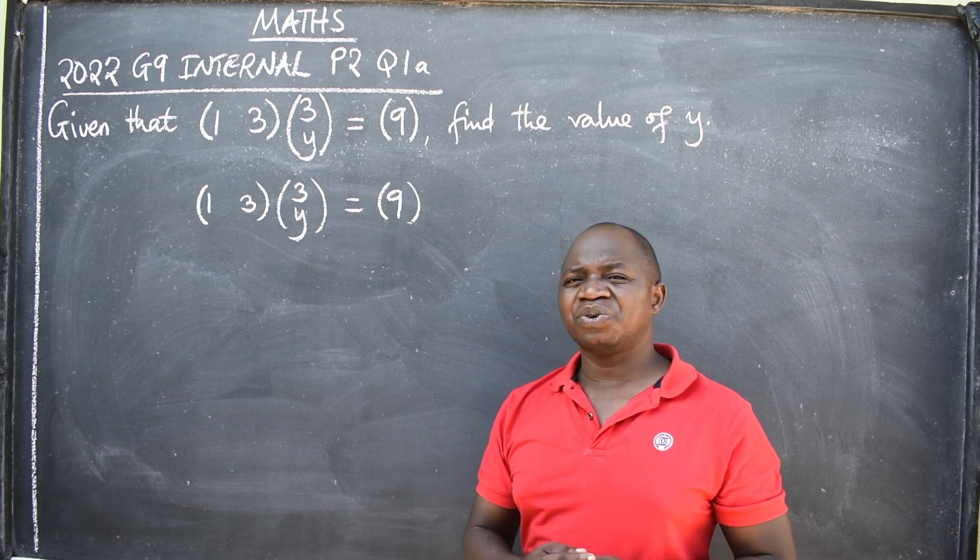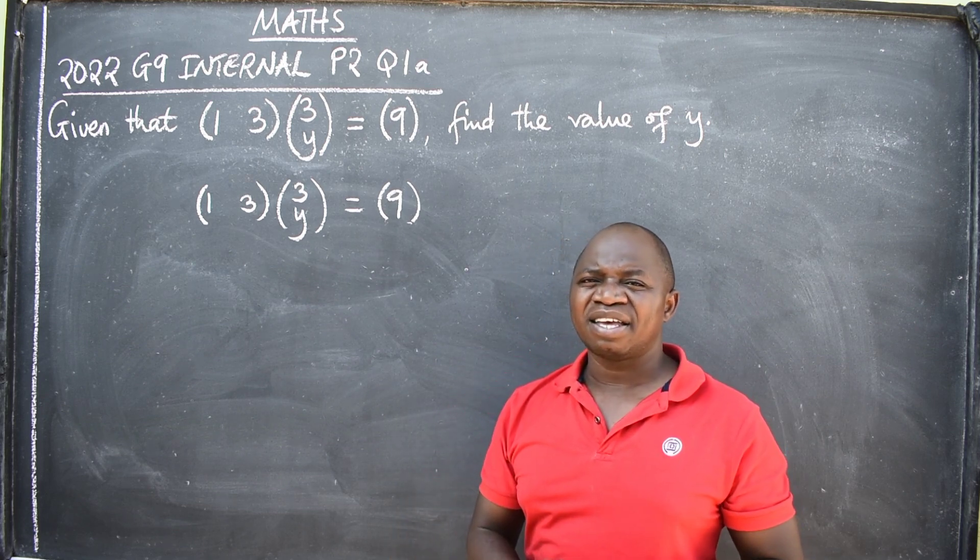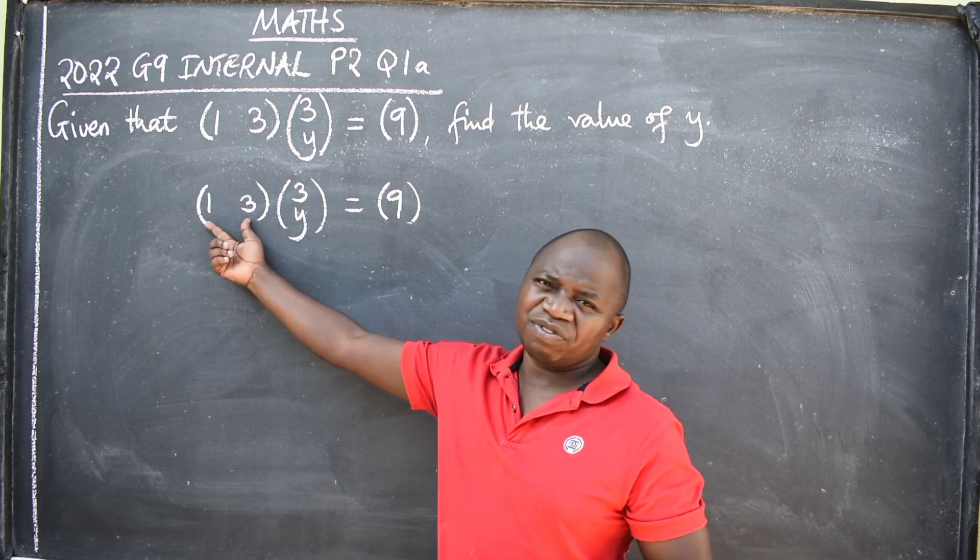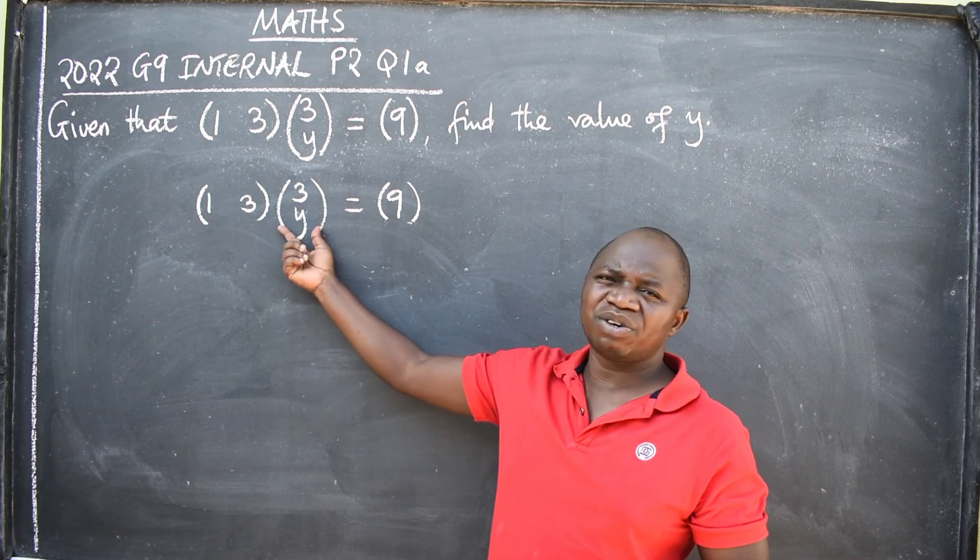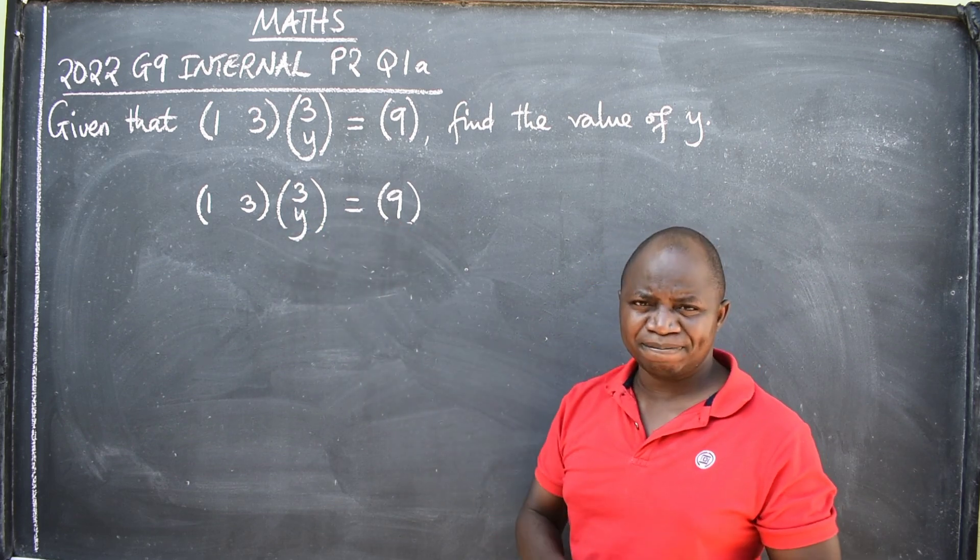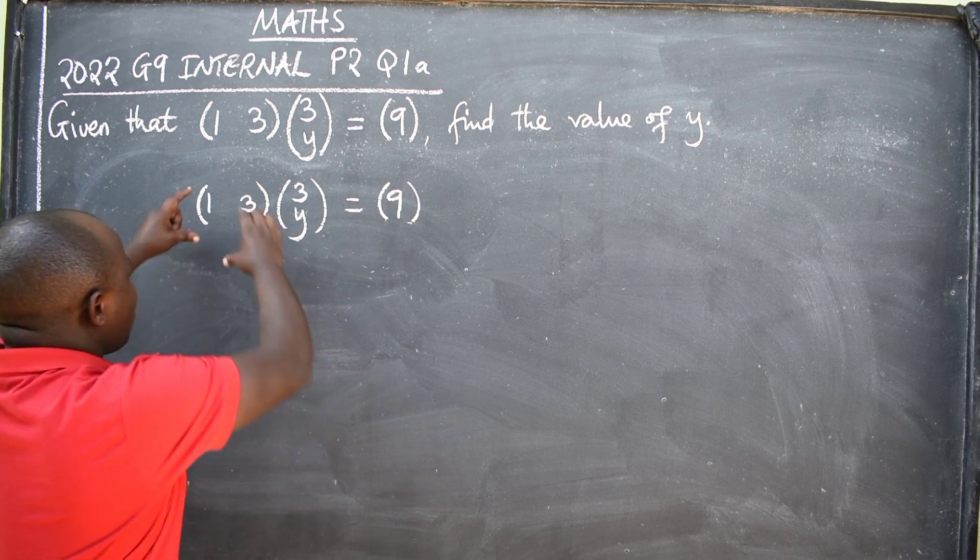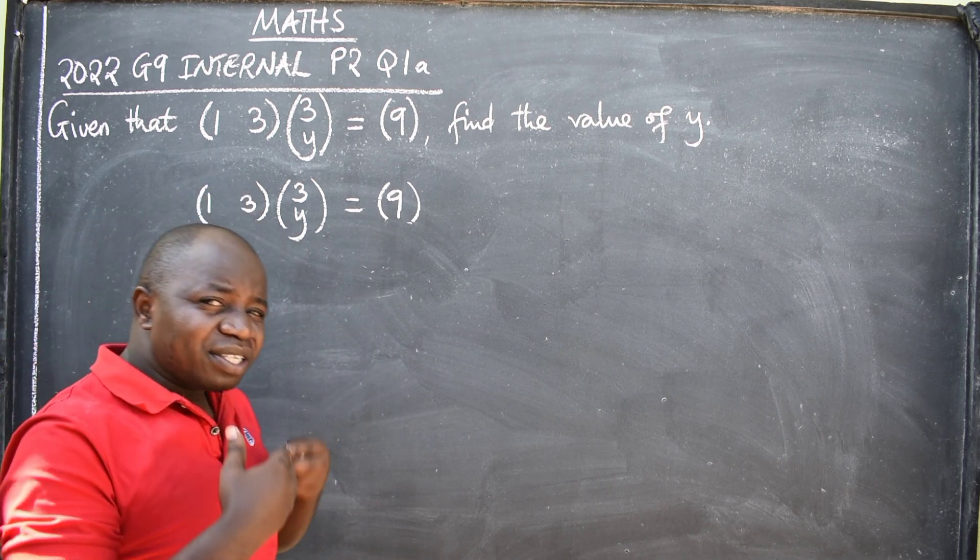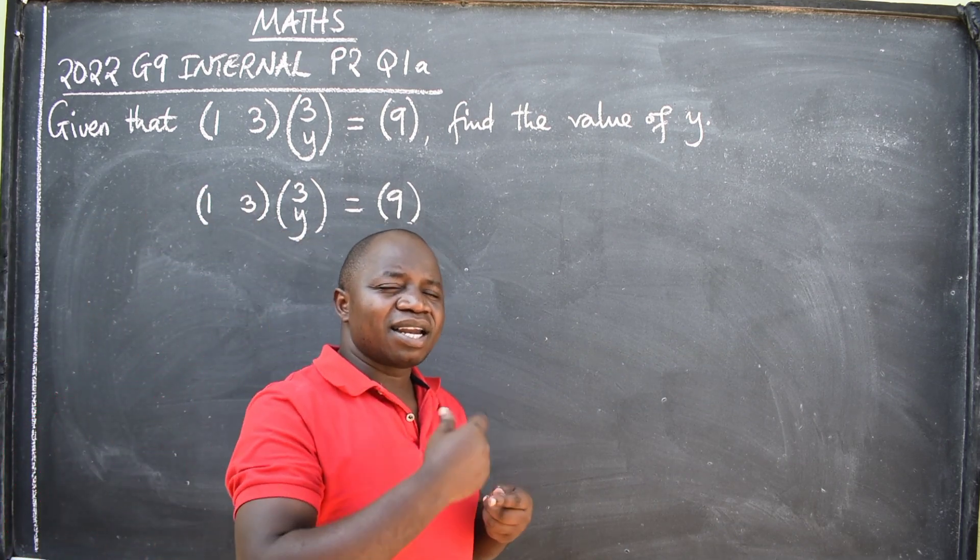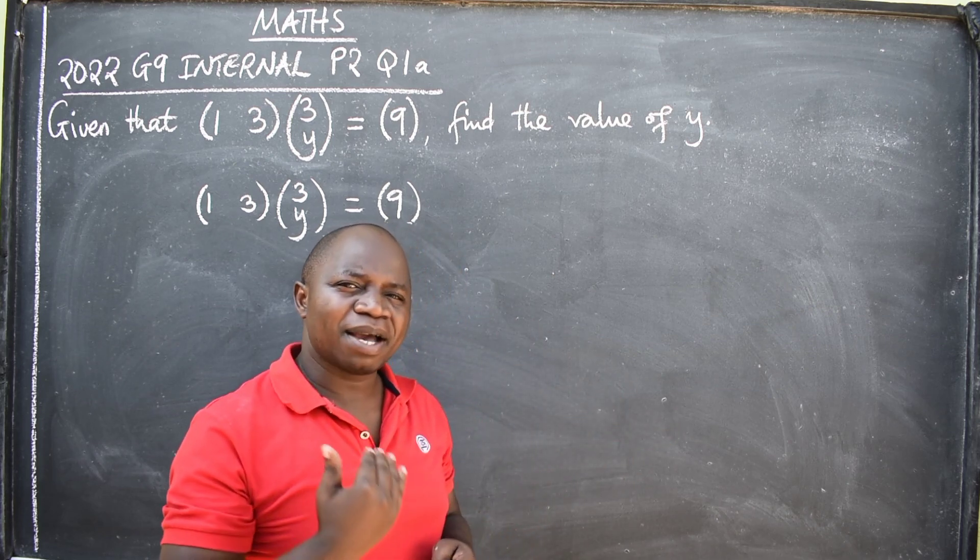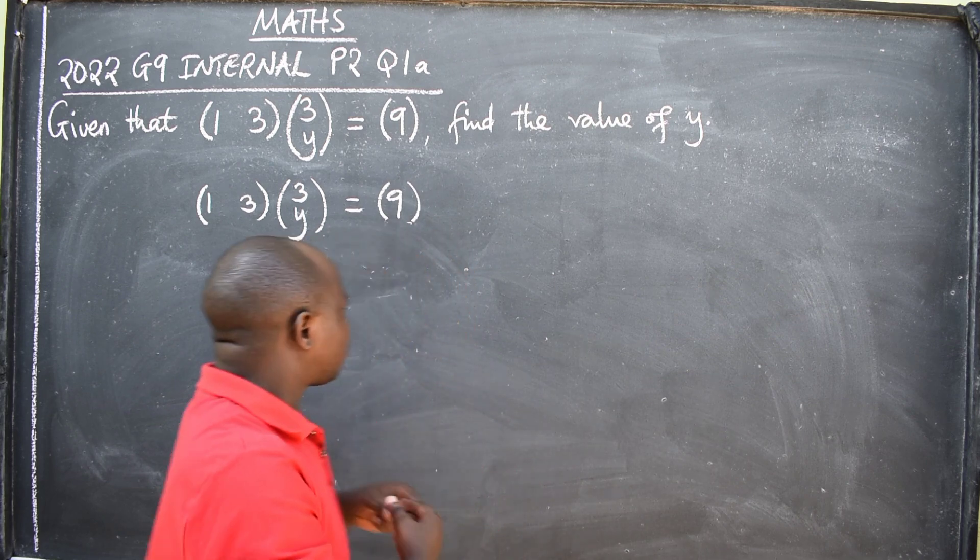The first thing that you need to do is to identify their orders. So, identify the order of this matrix, identify the order of this matrix, and this matrix. How do we go about it? Order of a matrix is always given by the number of rows, that's the first one, multiplied by the number of columns.